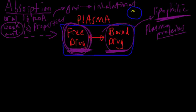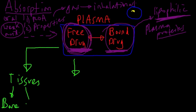Once we're in the plasma, I really like to think of the plasma as the body's highway. Once you're on the highway, you can go anywhere. You can go to tissues, and those tissues could be anything from bone to fat, muscle, nervous tissue, etc.